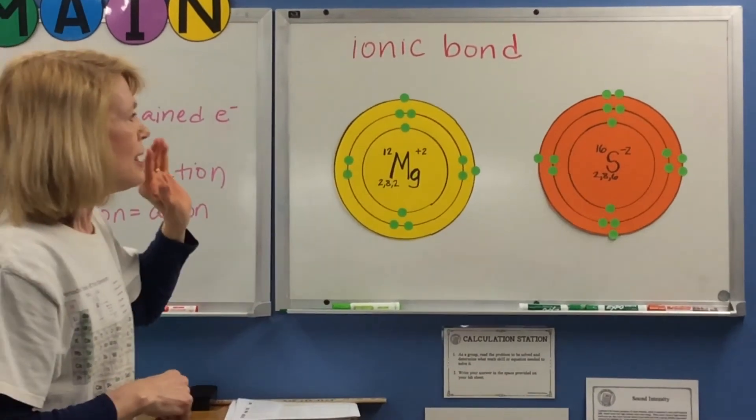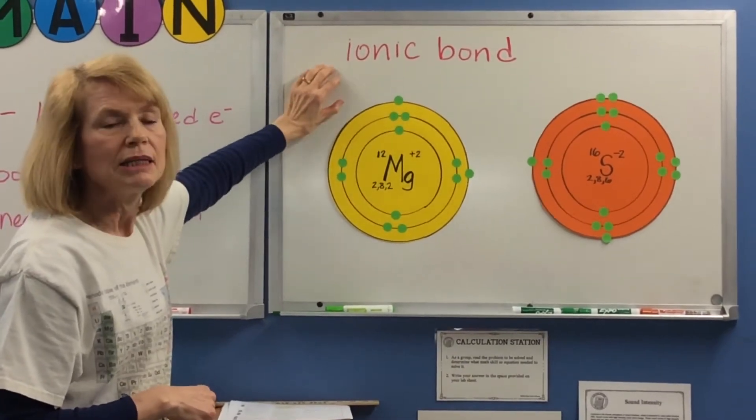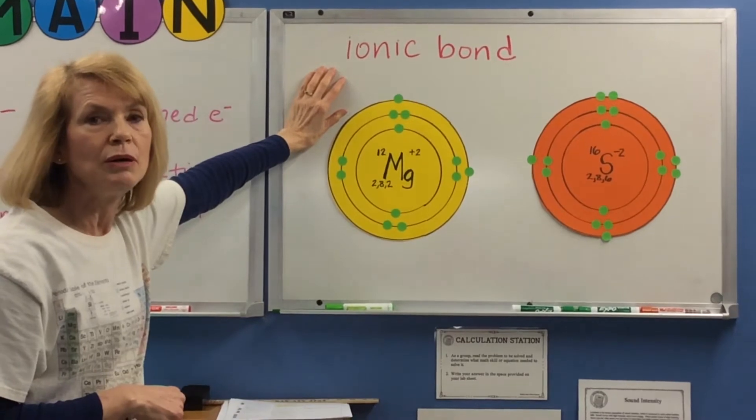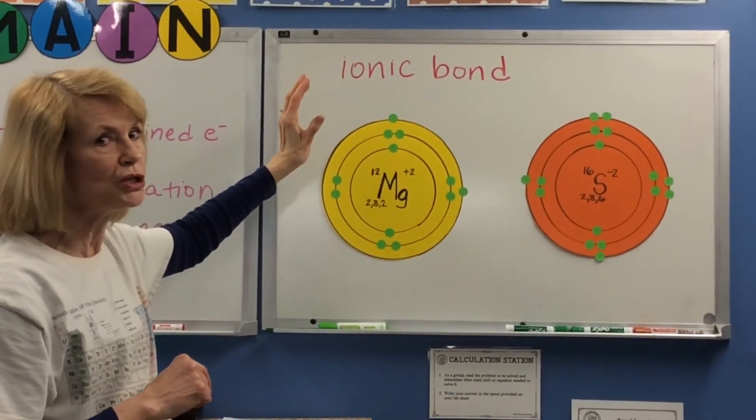Remember the octet rule. The octet rule - they're happier if they have 8 electrons in their outermost shell.